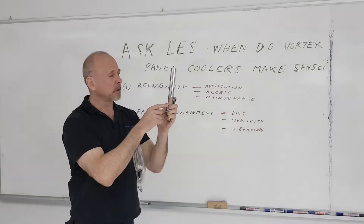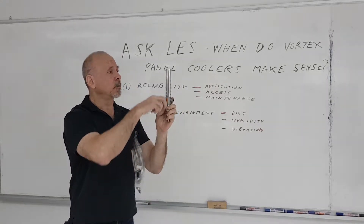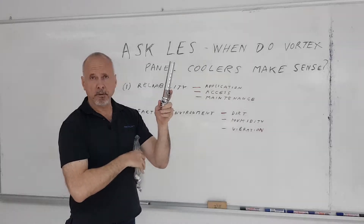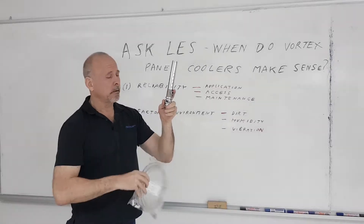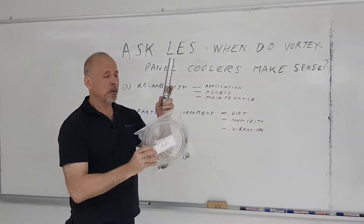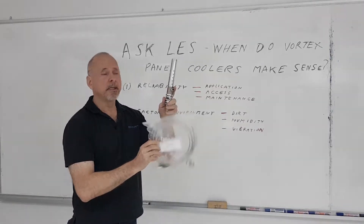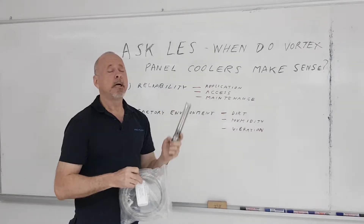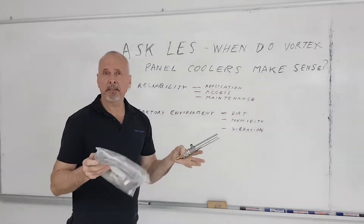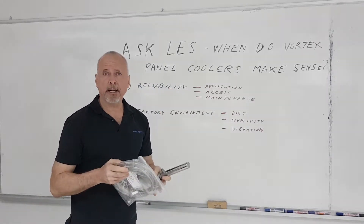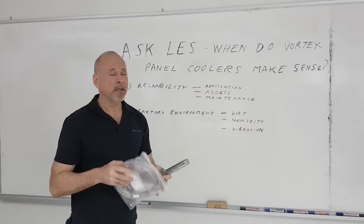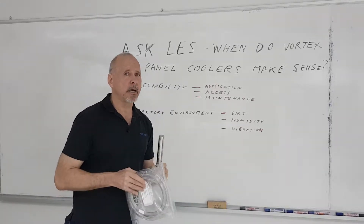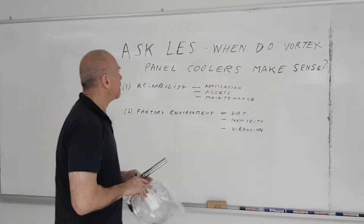It operates by having compressed air coming in, which literally splits into a hot stream and a cold stream. The cold stream goes into a control panel through a hose with holes in it to distribute the cold air inside — basically air conditioning the inside of the control panel. But when is the best time to use this kind of technology?